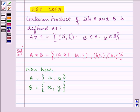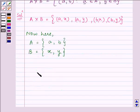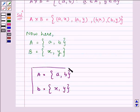So the answer comes out to be: A is equal to {a, b} and set B is equal to {x, y}. This becomes the answer which we were supposed to find out.